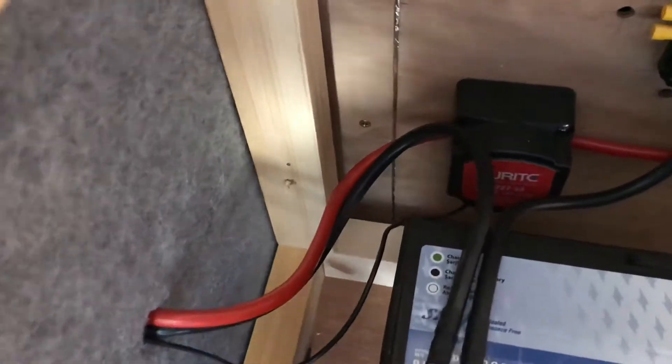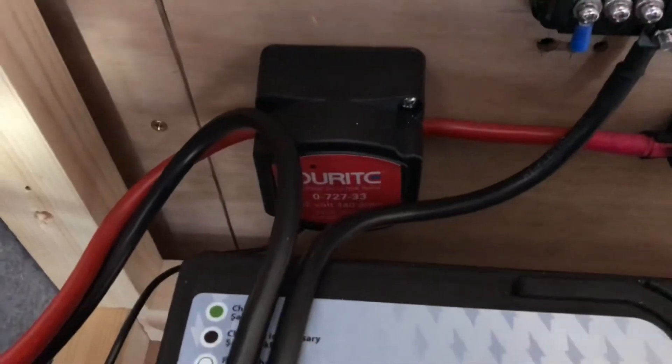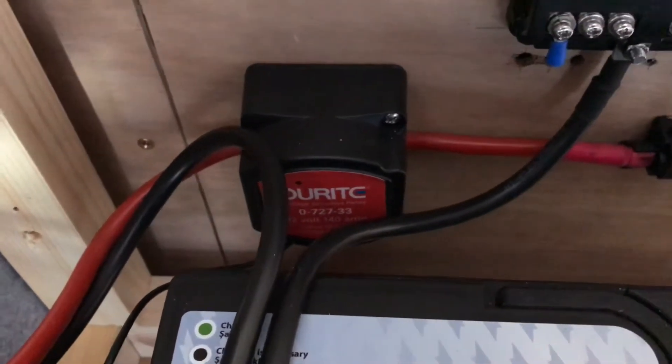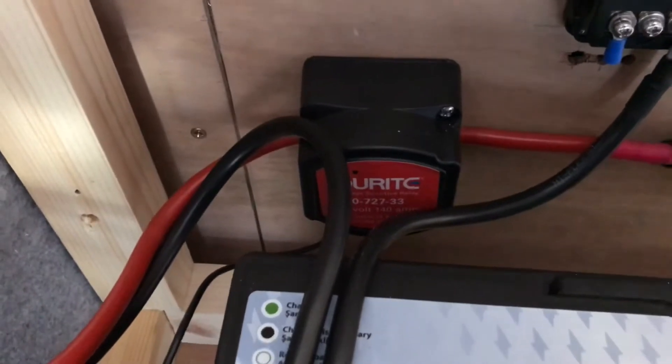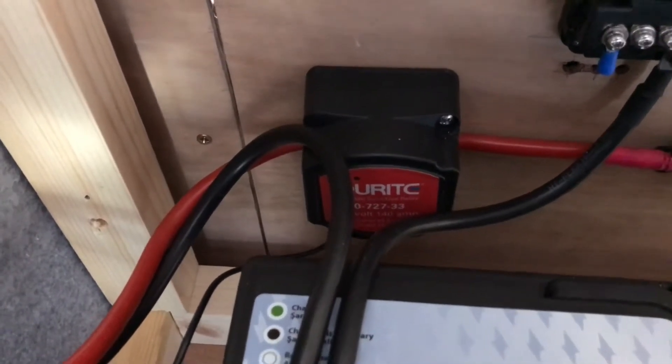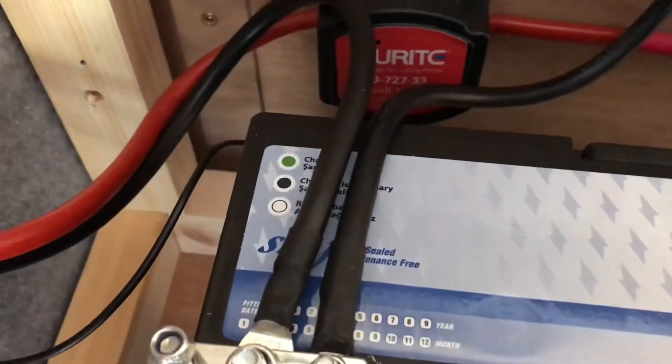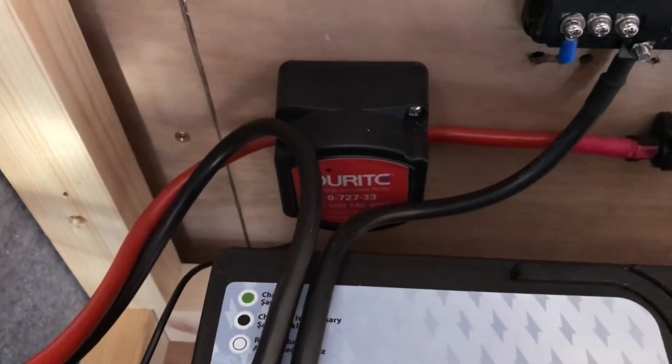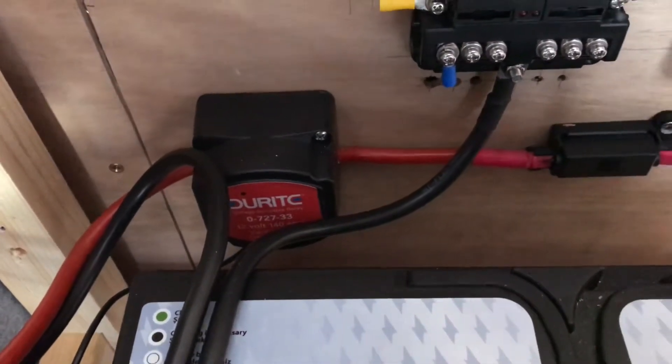So you've got your fuse at the battery, coming into the volt sensor relay. It basically picks up the voltage from your starter battery. Once it gets above a certain level, it kicks in and charges your second battery. If it ever drops, it'll cut out so you're not going to drain your starter battery.